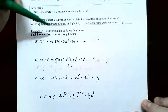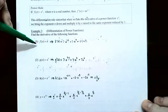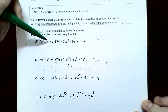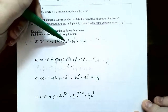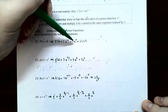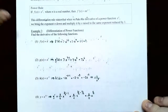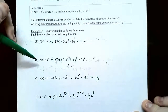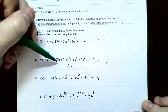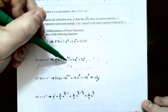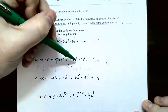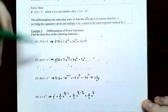Example two, differentiation of power functions. Find the derivative of the following functions. Number one, f of x equals x. This is x to the first power, so f prime of x: bring the exponent 1 down, keep the x, subtract 1 from the exponent. You have 1 times x to the 0 power, and anything raised to the 0 power is 1, so 1 times 1 is 1. The derivative of f of x equals x is 1. Number two, g of x equals x to the 7th. The derivative g prime of x equals 7 times x to the 7 minus 1 power, so 7x to the 6th.